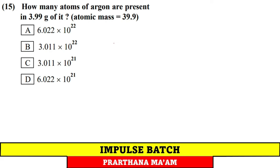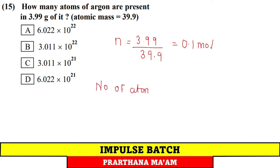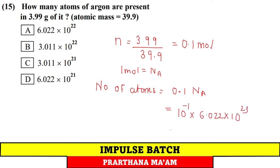Question 15: How many atoms of argon are present in 3.99 g? This is a repeat question. Moles = 3.99 / 39.9 = 0.1 mol. Number of atoms = 0.1 × 6.022 × 10²³ = 6.022 × 10²². Option A.